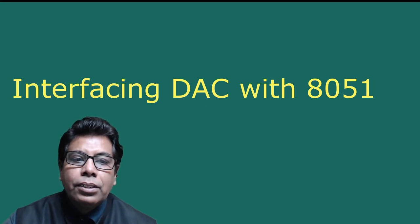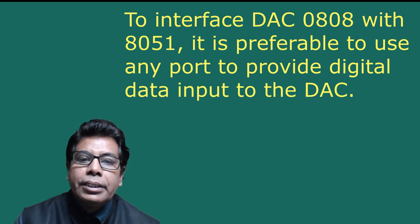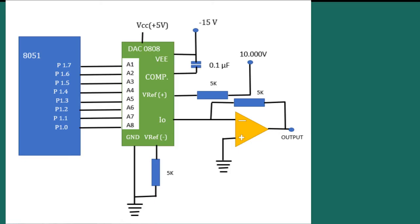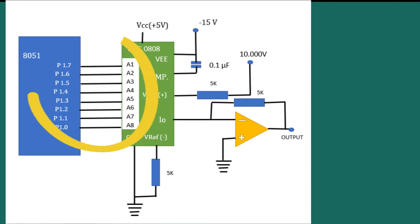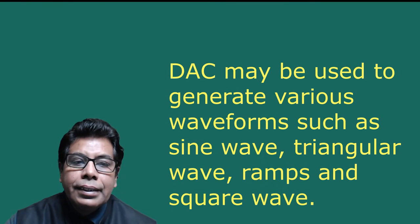Let us go to the interfacing of DAC with 8051. To interface DAC 0808 with 8051, it is preferable to use any port to provide digital data input to the DAC. Apart from 8 digital input signals, the DAC needs a reference voltage also. The data input lines are designated as A1 through A8. Interfacing with port 1 of 8051 is shown: P1.0 is connected to A8, P1.1 is connected to A7, and so on. Pin 16 of DAC (compensation) needs a 0.1 microfarad capacitor between this pin and pin 3 (VEE). At the output stage an op-amp is necessary to supply sufficient current. DAC may be used to generate various waveforms such as sine wave, triangular wave, ramp, and square wave.